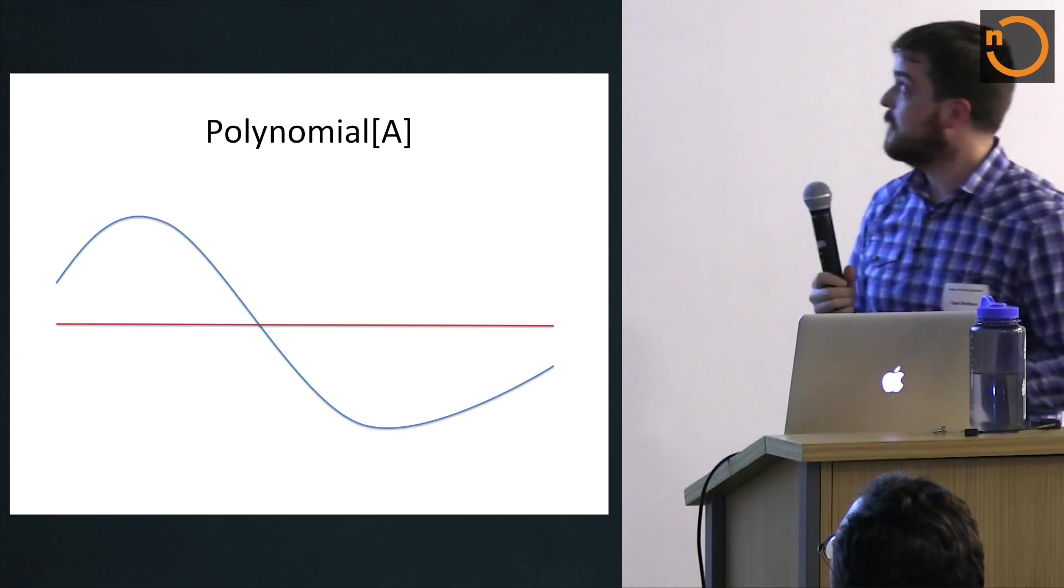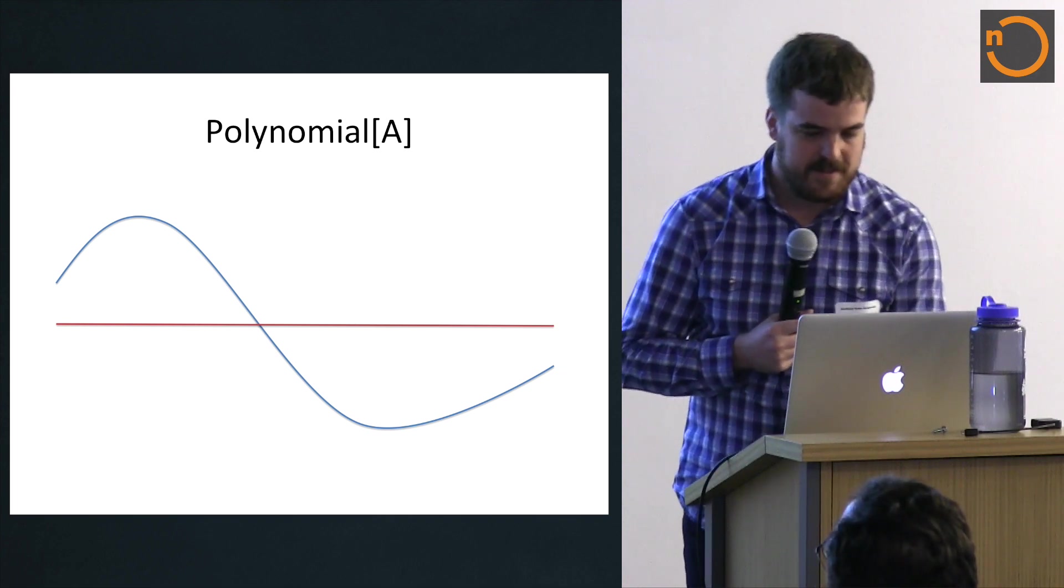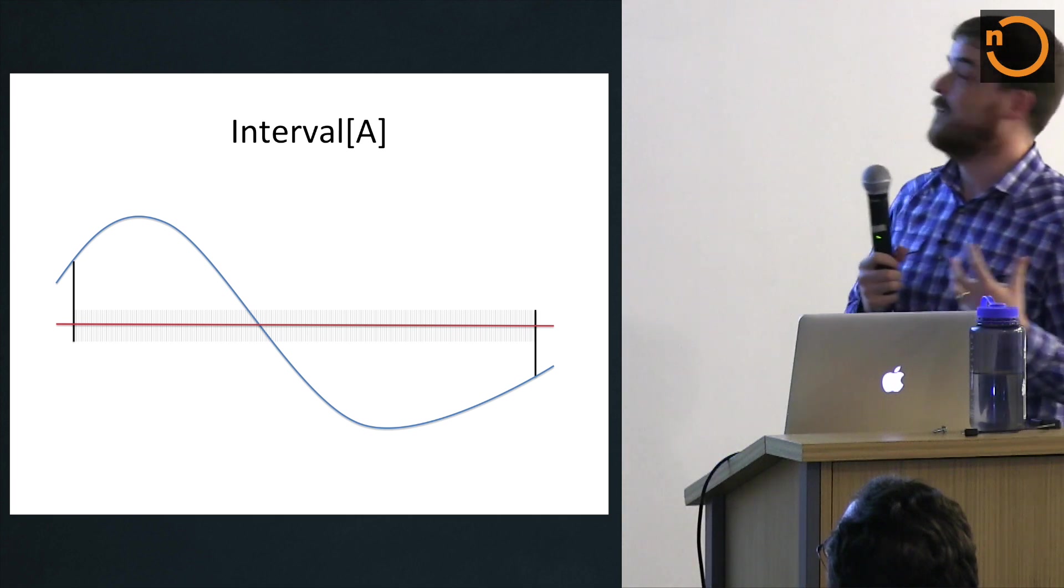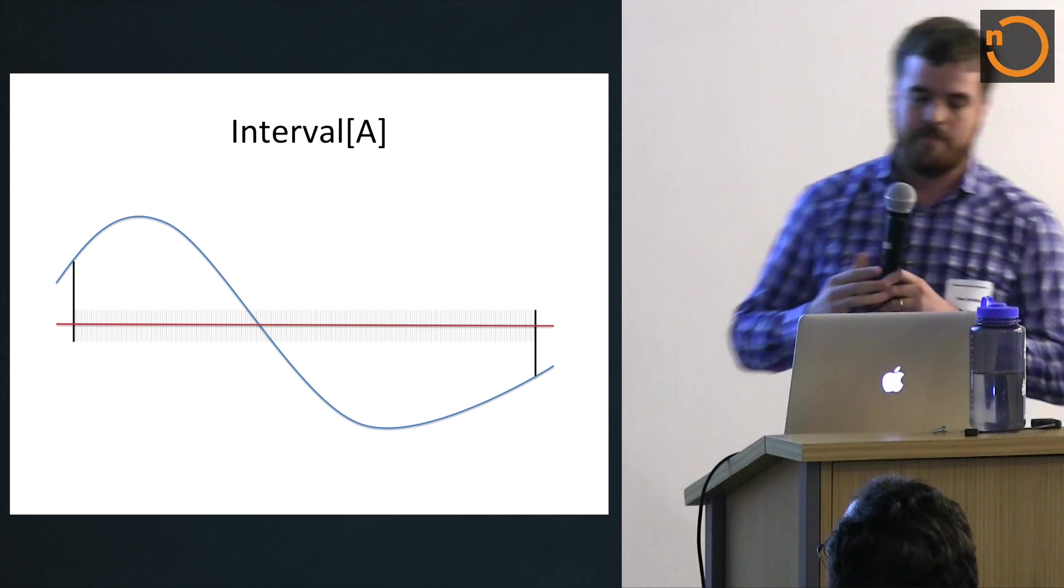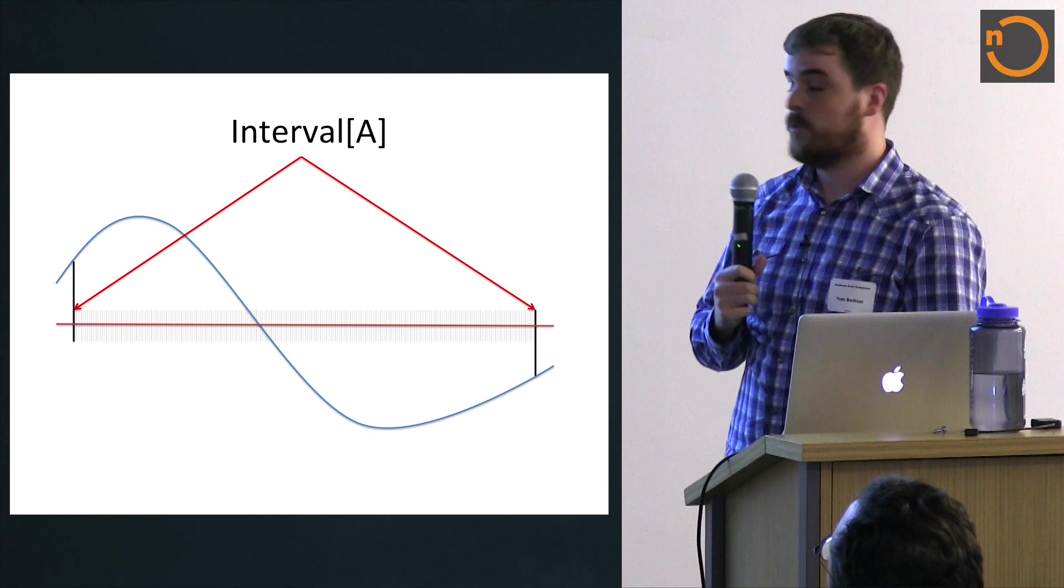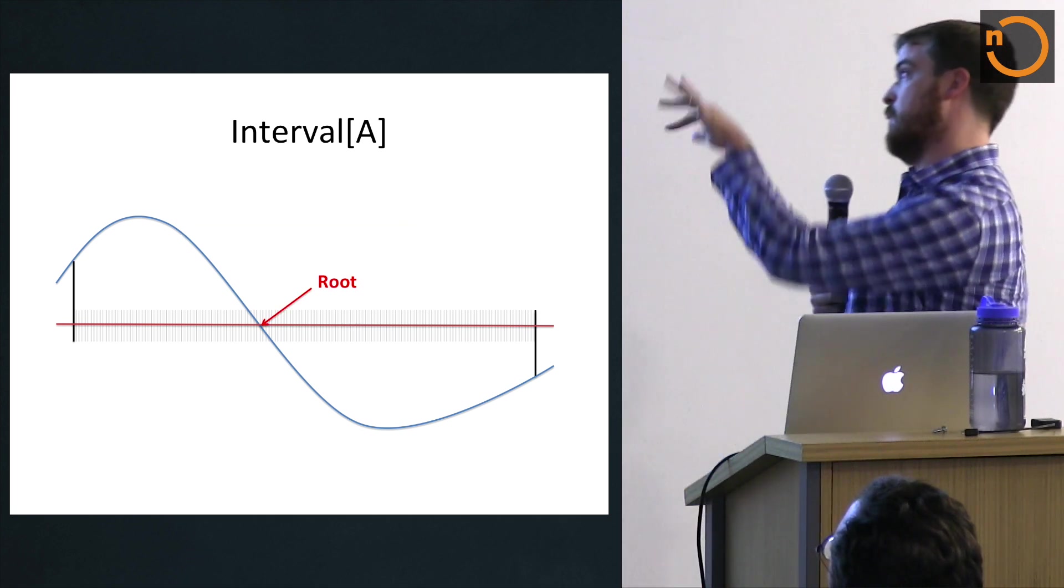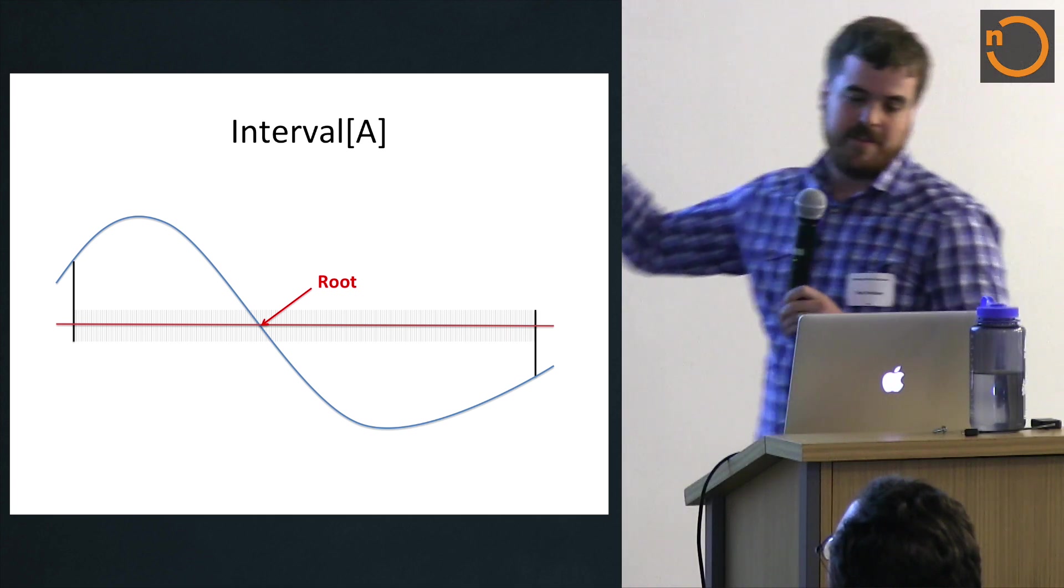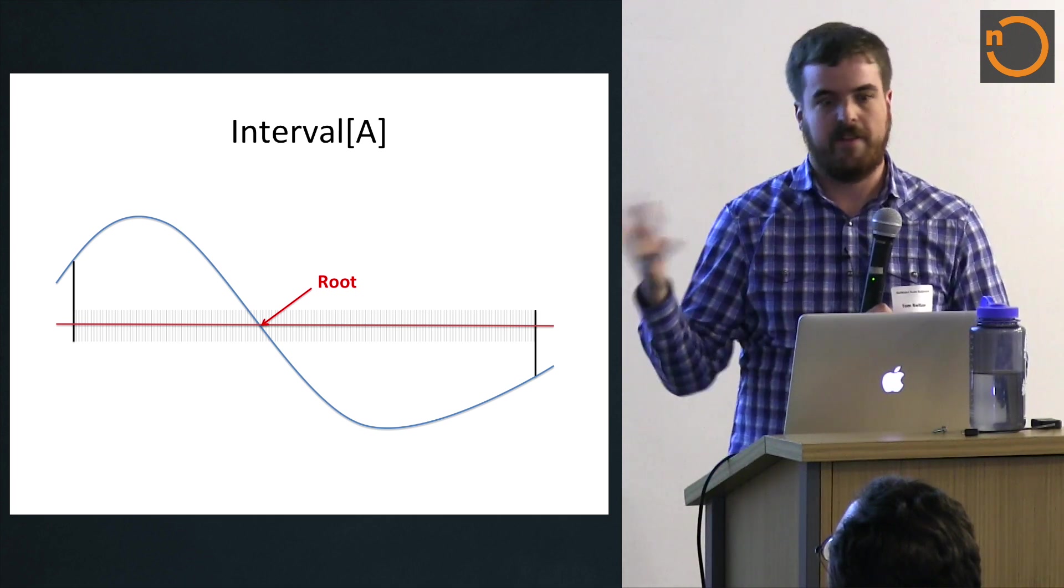But basically, we have our polynomial here. The red line is our x-axis. And what we want to do is we have some interval. Spire provides a nice interval type to do this. So this is our interval here. And what we're told is that this interval will contain exactly one root. And what's nice is that, so that's the root here, it's where it crosses the x-axis. What's nice is that we know that on each side of our interval, the polynomial will have an opposite sign. So on the right side it's positive, or negative, on the left side it's positive.